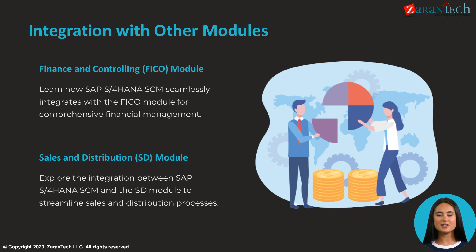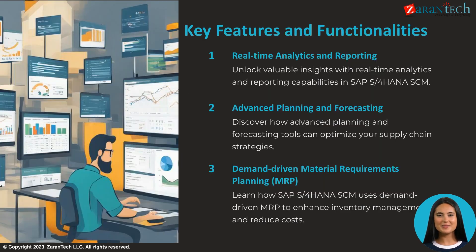A key strength of SAP S/4HANA is its seamless integration between modules. The SCM functionality integrates tightly with Financials and Controlling, or FICO, for cash flow, costing, and financial analysis. It also connects to Sales and Distribution, or SD, for order and delivery processing. This tight integration gives you unprecedented visibility and control across your operational and financial data.